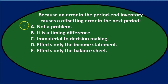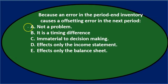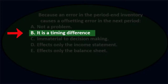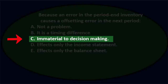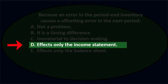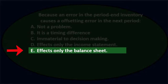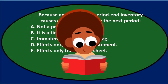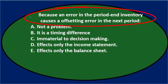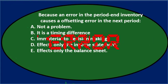Next question: Because an error in the period-end inventory causes an offsetting error in the next period — A. It's not a problem, B. It is a timing difference, C. It is immaterial to decision making, D. It affects only the income statement, E. It affects only the balance sheet. An error in one period typically causes a reversing — opposite direction — error in the next period, so over two periods it evens itself out.